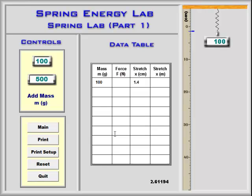Since this is in centimeters, we'll change this to 0.014 meters by dividing by 100. Then we'll continue to take data, and when we're done we can print out the data table.